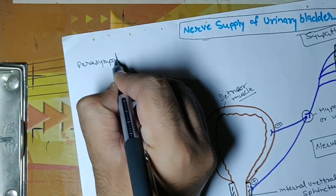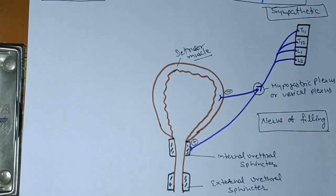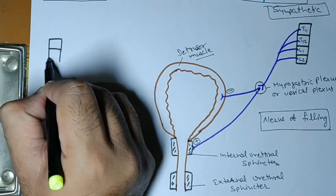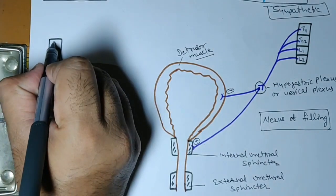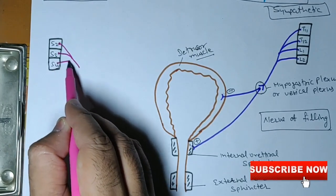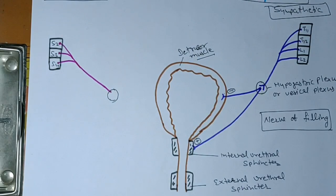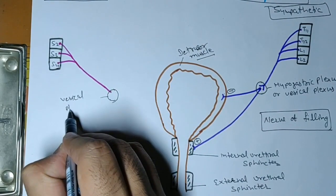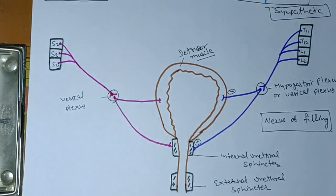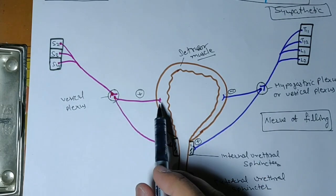On the other side we have the parasympathetic nerve fibers. The parasympathetic fibers will come from three segments: S2, S3, and S4. These pre-ganglionic fibers arising from S2, S3, S4 will relay in the vesical plexus, and from there post-ganglionic fibers will arise. One will go to the detrusor muscle and another will go to the internal urethral sphincter. The upper fibers are motor fibers for the detrusor muscle, and the lower fibers are inhibitory for the internal urethral sphincter.